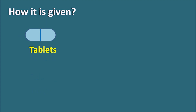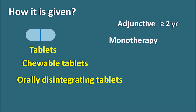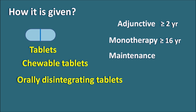This drug is available as tablet form as well as chewable tablets and orally disintegrating tablets. For adjunctive therapy it should be given in patients aged greater than or equal to 2 years; for monotherapy in patients aged greater than or equal to 16 years; and as maintenance therapy for bipolar depression in patients aged greater than or equal to 18 years.